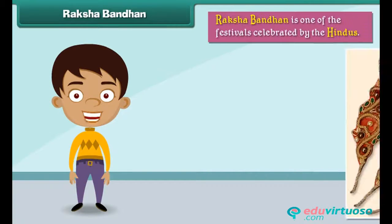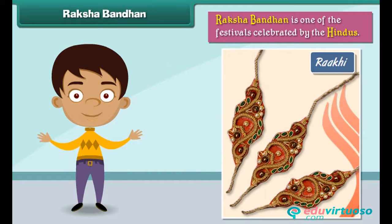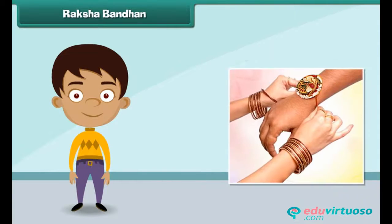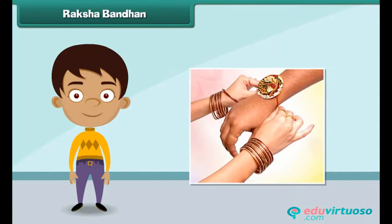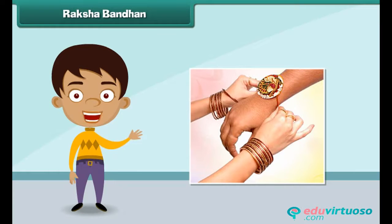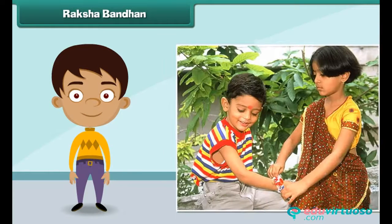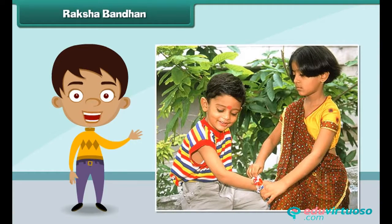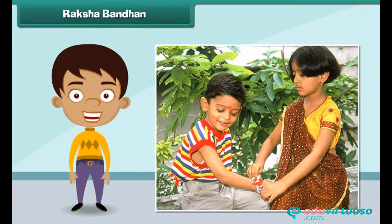Raksha Bandhan is one of the festivals celebrated by the Hindus. On this day, sisters tie rakhis on the wrists of their brothers and pray for their well-being. In return, brothers promise to protect their sisters from all evil.